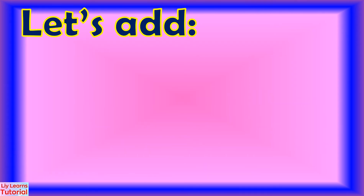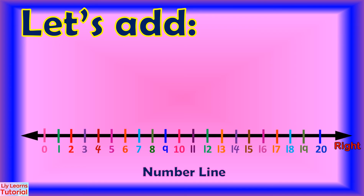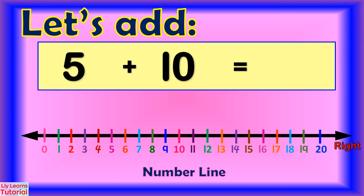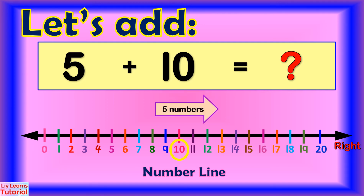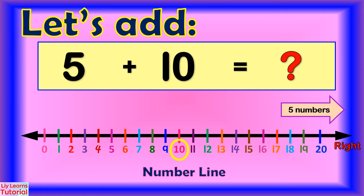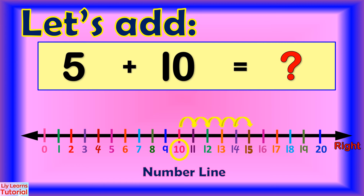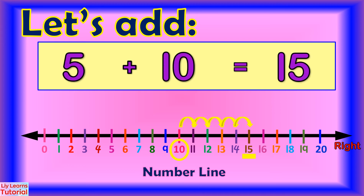We can carry out addition using a number line. To find the sum of 5 plus 10, we start from the bigger number, which is 10, and jump 5 numbers to the right: 1, 2, 3, 4, 5. In what number did we land? Yes, you're right — 15. So the sum of 5 plus 10 is 15.